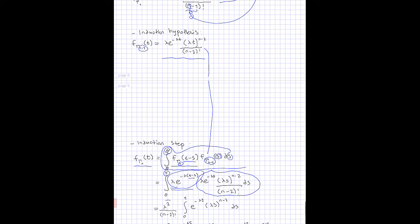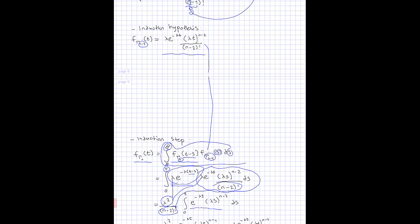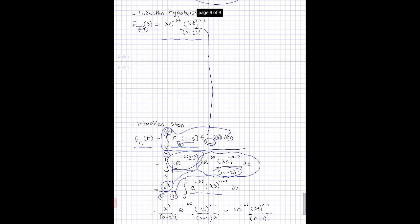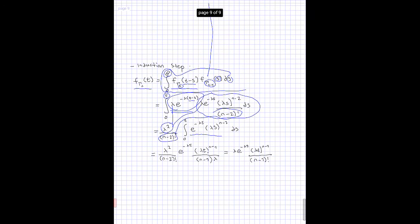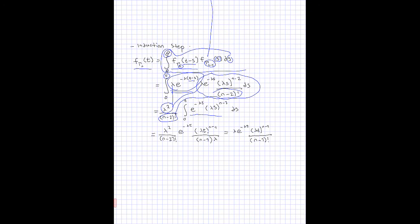Next we take out some terms which are constant and do not depend on s. This gives us a constant factor times an integral, where the exponent n minus 2 appears. We are left with a simplified integral, and we need to find the primitive function to solve the integration.